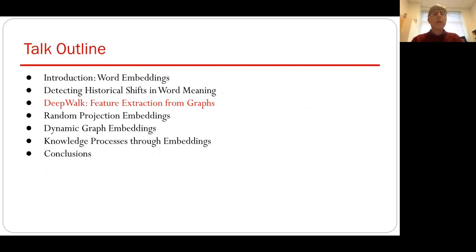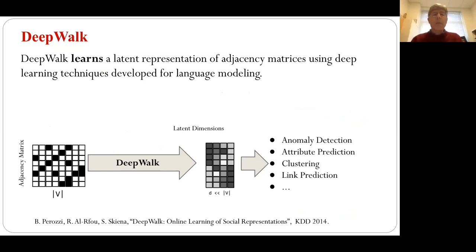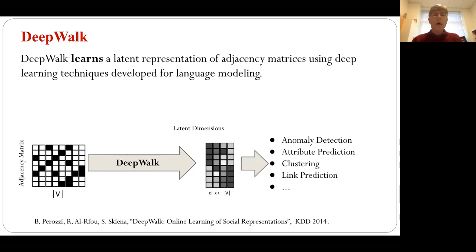One of the things we did to generalize beyond word embeddings was to extend this to graphs. If you are Mark Zuckerberg with access to a giant social network and you want to show ads to people, you want to take the connectivity pattern for each person — who they're connected to — and boil this down to a concise vector representation that you can use to train models. These are what we call graph embeddings, or node embeddings: a representation of what each vertex in the graph is.